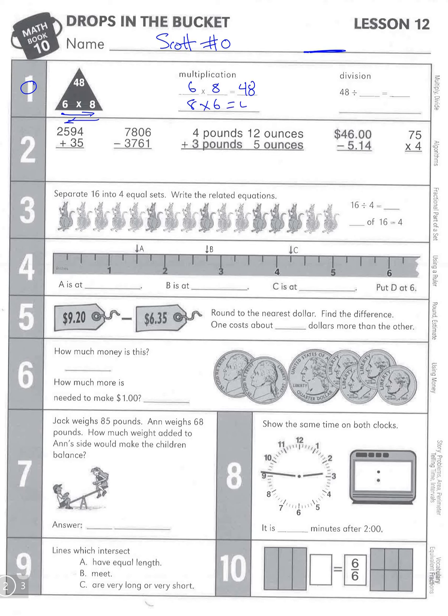When we flip that around and do division, if we had 48 and divide them into groups of 8, that gives us 6. If we had 48 and divided them into groups of 6, we would have 8 groups.